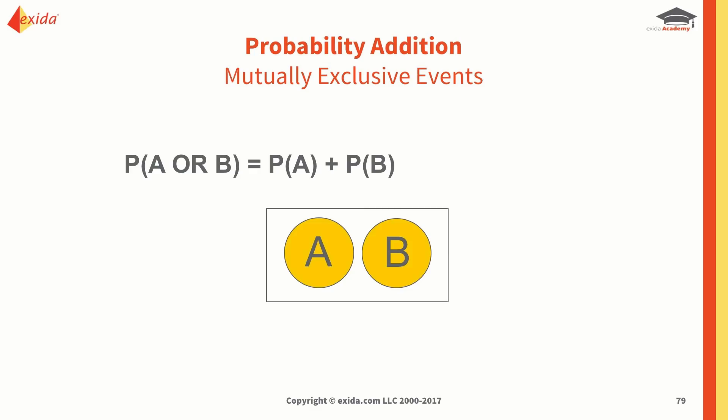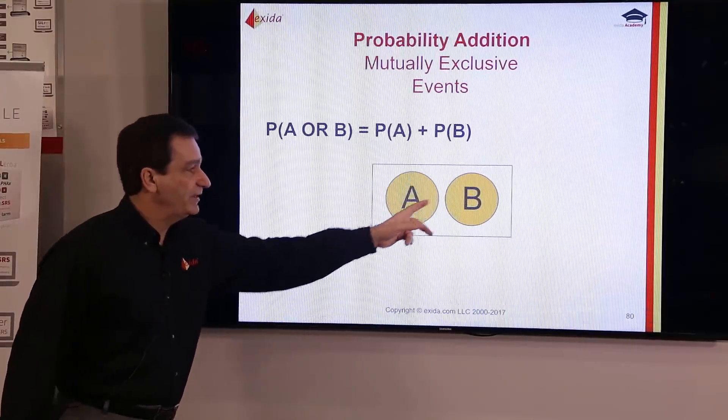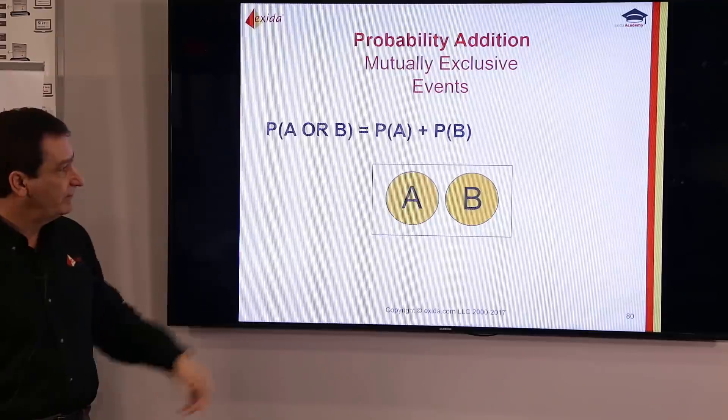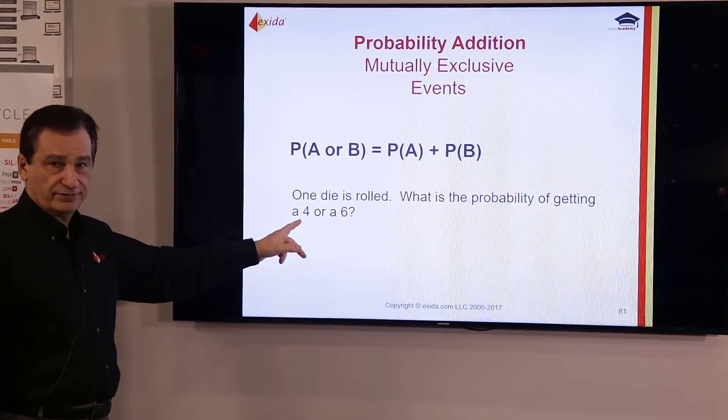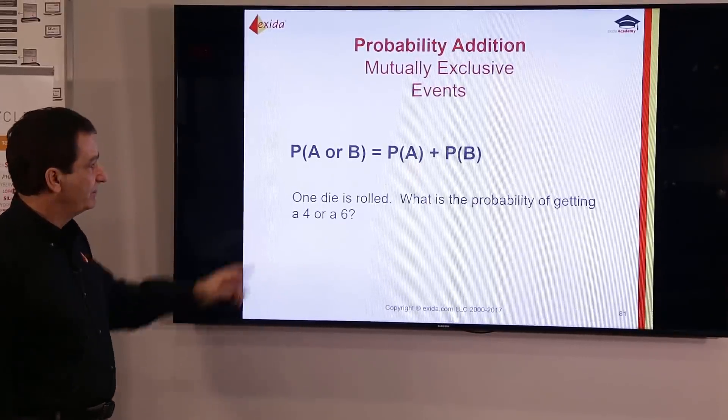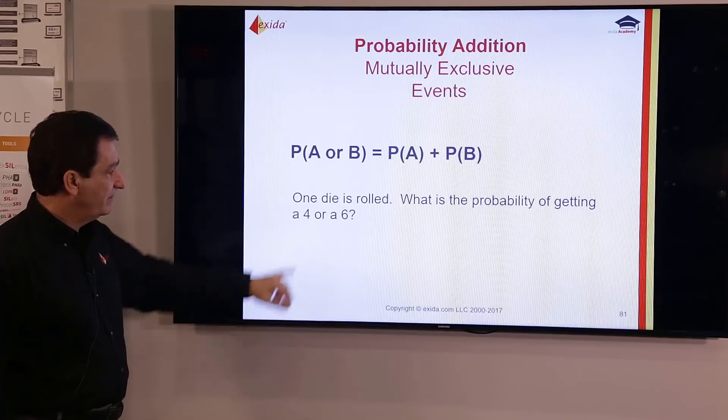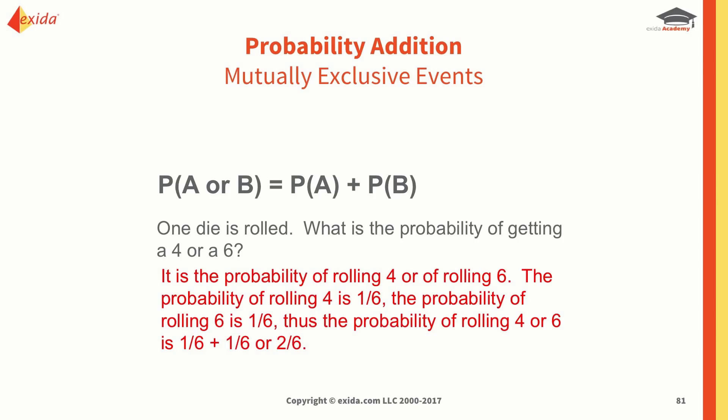For mutually exclusive events, if one occurs the other cannot possibly happen. With a coin toss, if we get a head we cannot get a tail — these are completely separate with no possibility of overlap. So if one die is rolled, what is the probability of getting a 4 or a 6? We have six possible combinations, so the probability of A or B is 1/6 plus 1/6, which is 2/6 or one third.